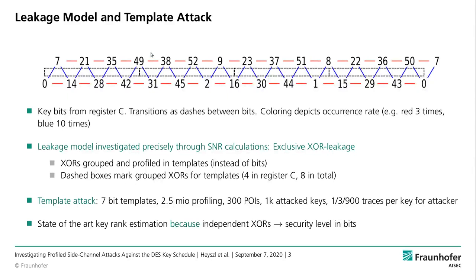The transitions between key bits are color-coded: red ones occur only three times and blue ones occur ten times. This is interesting because the number of bit transitions is much smaller than if those bits were randomly distributed across the round keys. In order to understand how the template attack should work in the best way, we needed to understand the leakage model of the device in more detail.